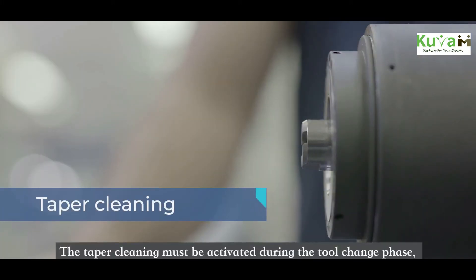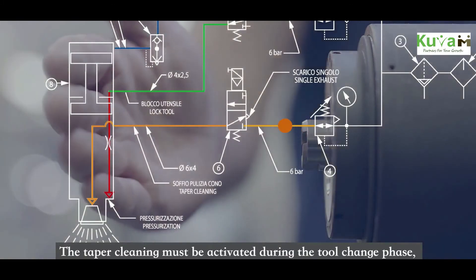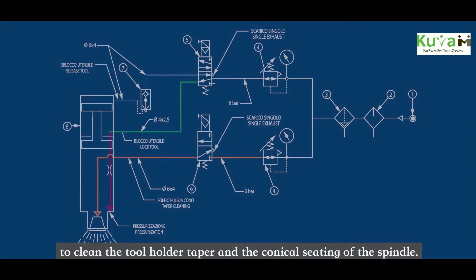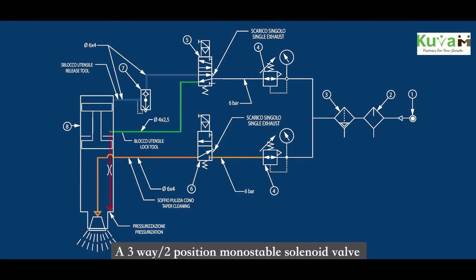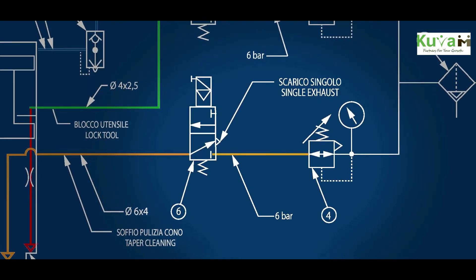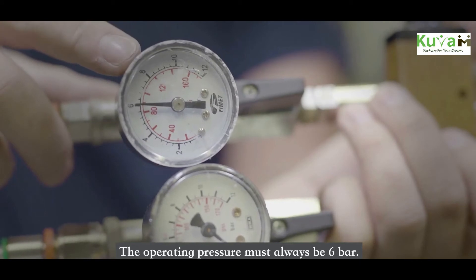The taper cleaning must be activated during the tool change phase to clean the tool holder taper and the conical seating of the spindle. A three-way two-position monostable solenoid valve must be used to manage it. The operation pressure must always be 6 bar.